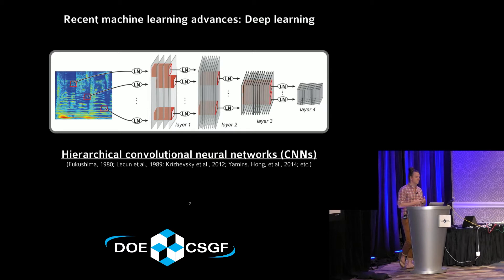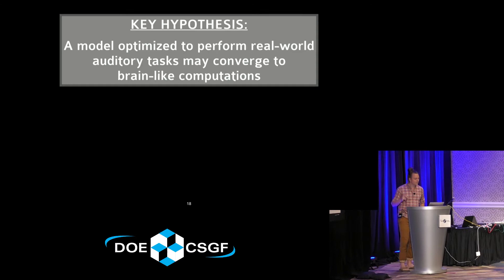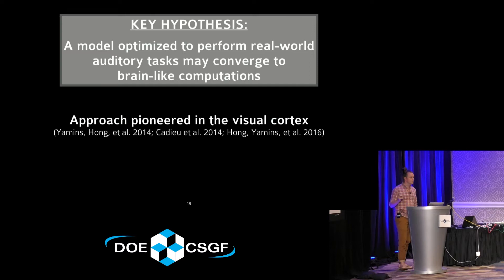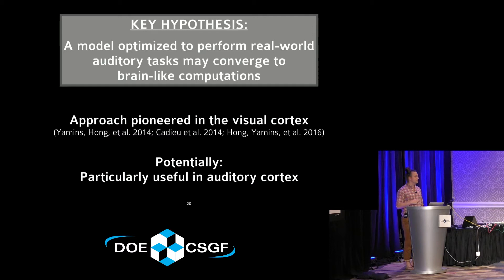The key hypothesis we're pursuing is that a model optimized to perform real-world tasks might converge to brain-like computations. This approach has been pioneered in visual cortex, where CNNs have been shown to recapitulate aspects of the hierarchical structure of the ventral visual stream. Given that less is known about the organization of the auditory system, we thought this approach may be particularly useful for addressing these fundamental questions.